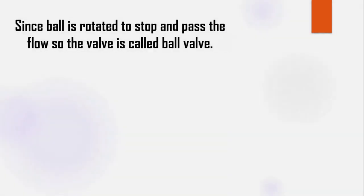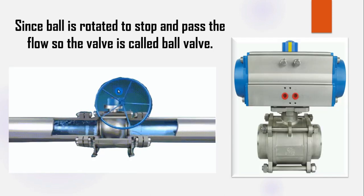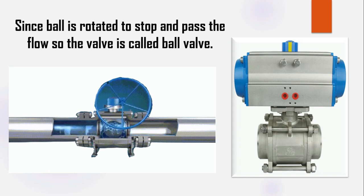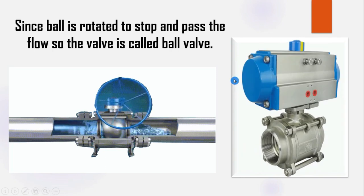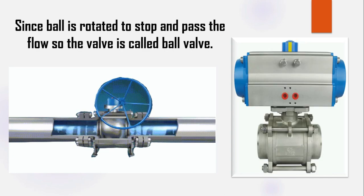The ball is rotated to stop and pass the flow, so the valve is called a ball valve. When we open the valve, this ball is rotated in such a manner that it will pass the flow, and when we close the valve, this ball is rotated in such a manner that it will stop the flow.